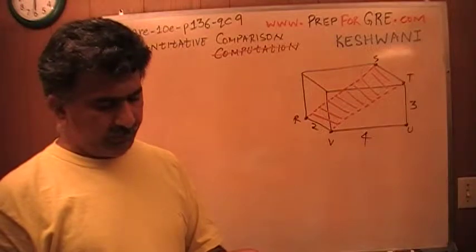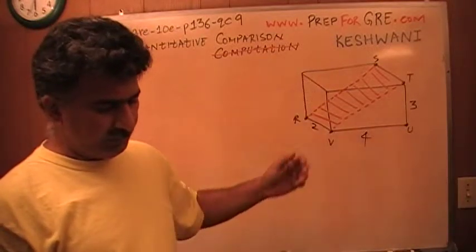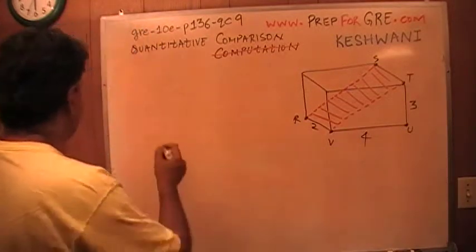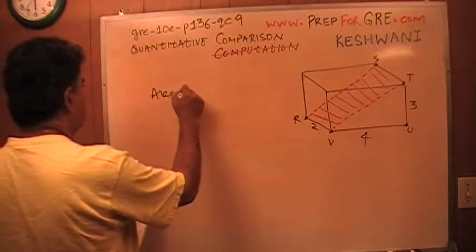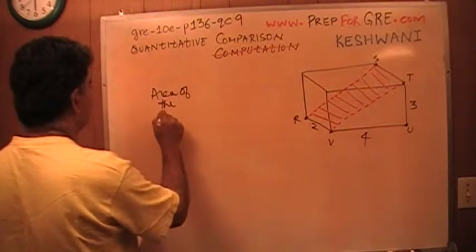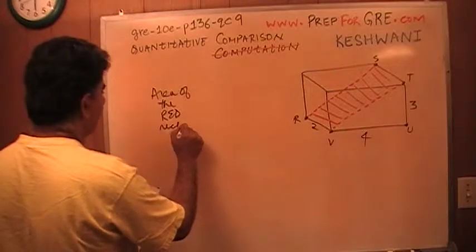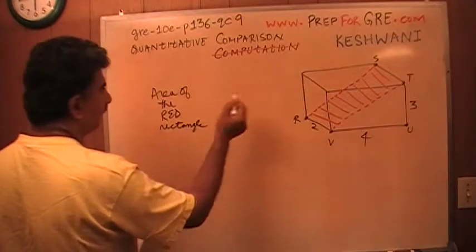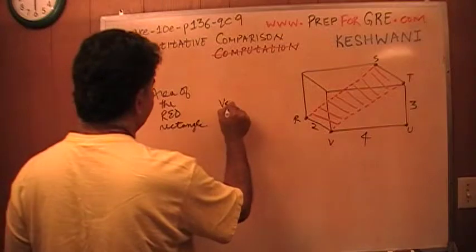They want us to compare the area of the shaded region that we see there, the area of the shaded rectangular region. Area of the, I'm just going to call it the red rectangle that you see there, versus 9.